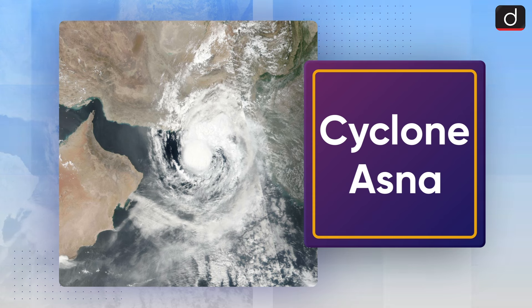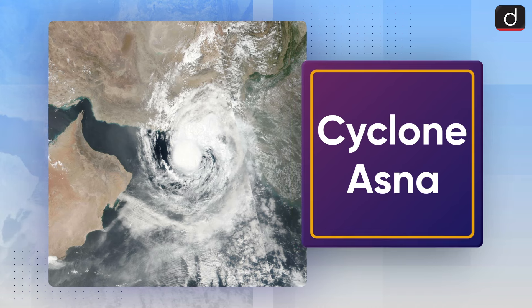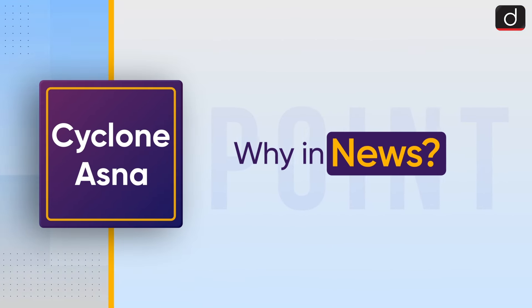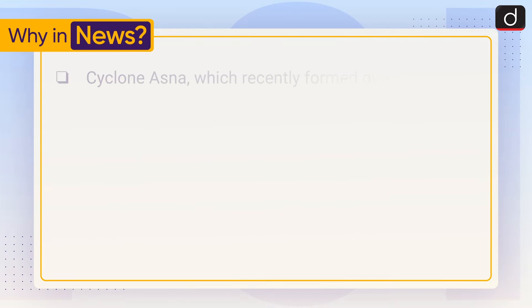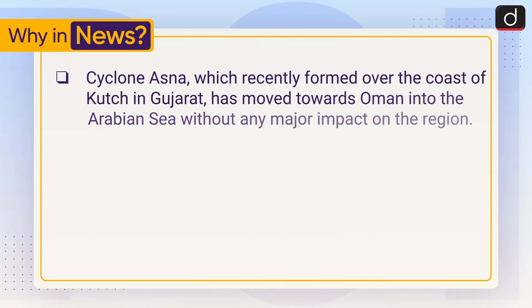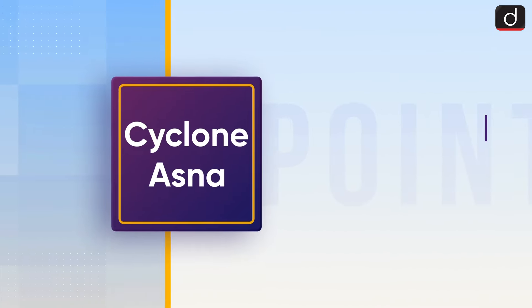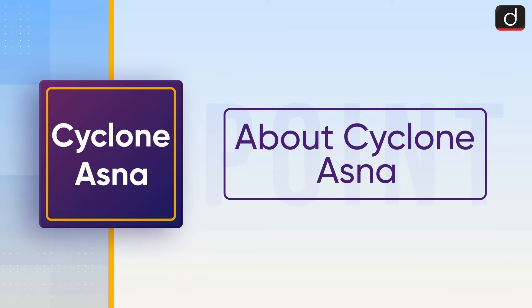Hello and welcome to another episode of To The Point. The topic of discussion is Cyclone Asana. Cyclone Asana recently formed over the coast of Kutch in Gujarat and has moved towards Oman into the Arabian Sea without any major impact on the region.